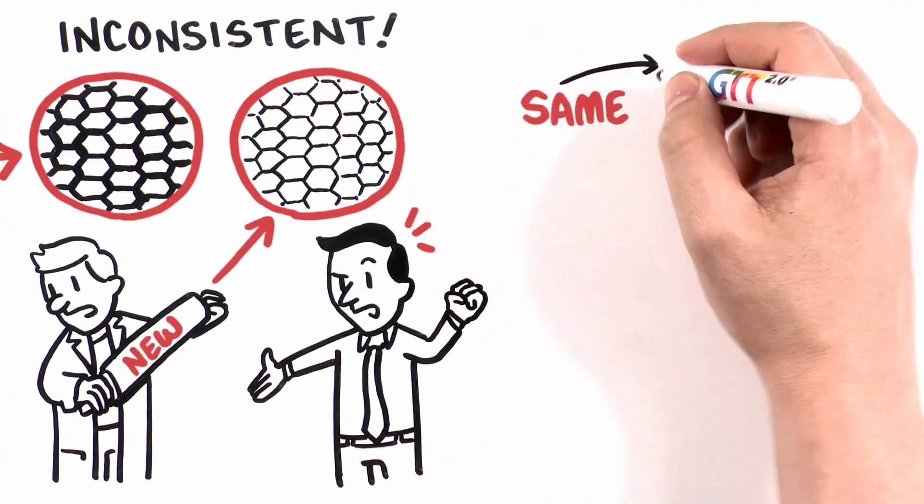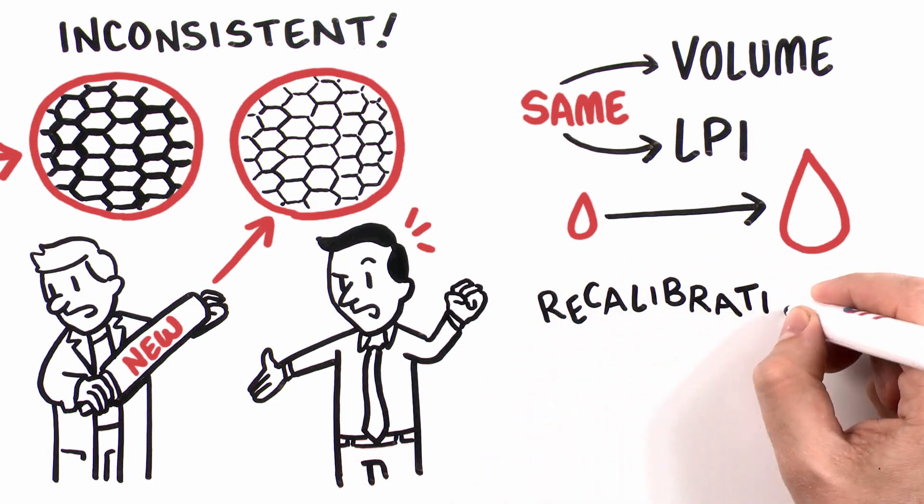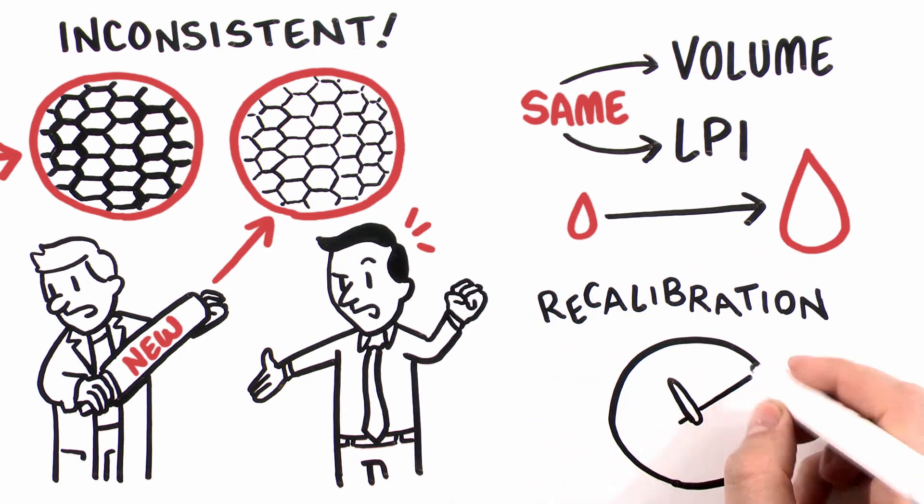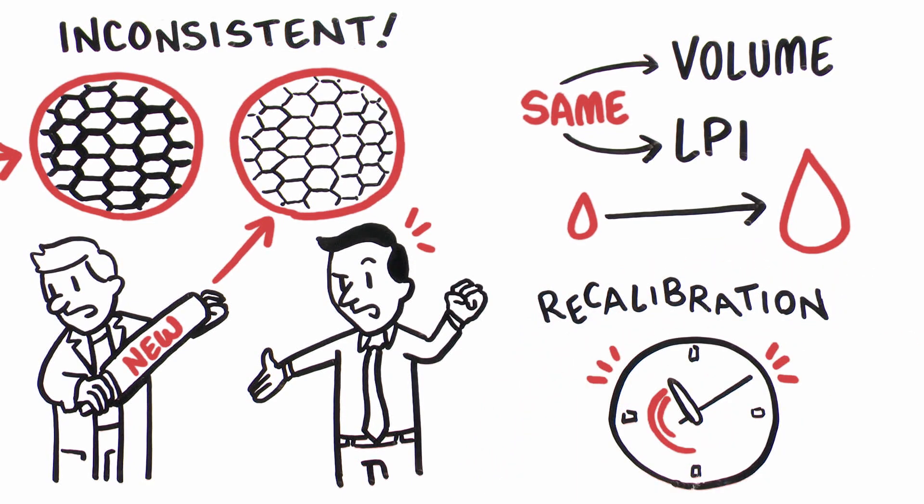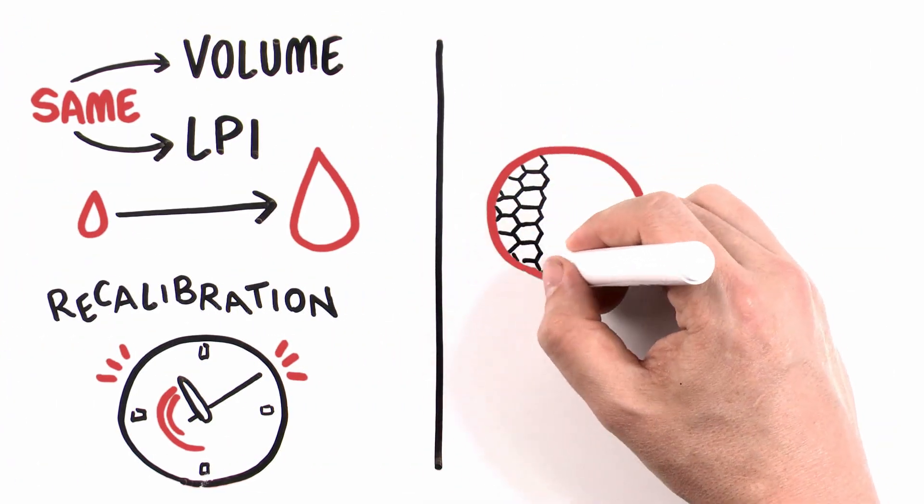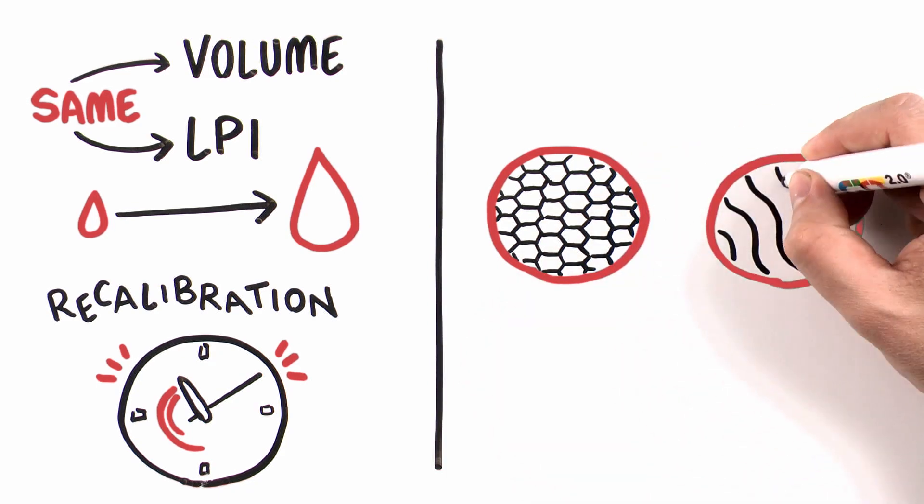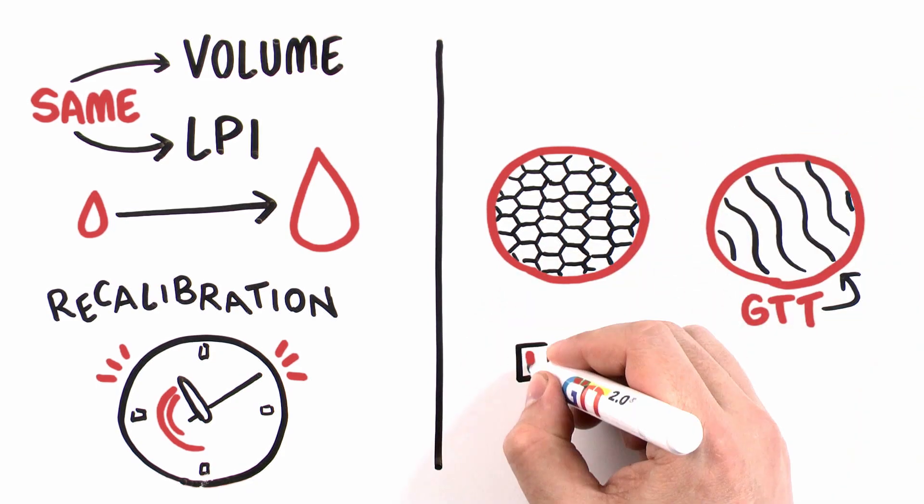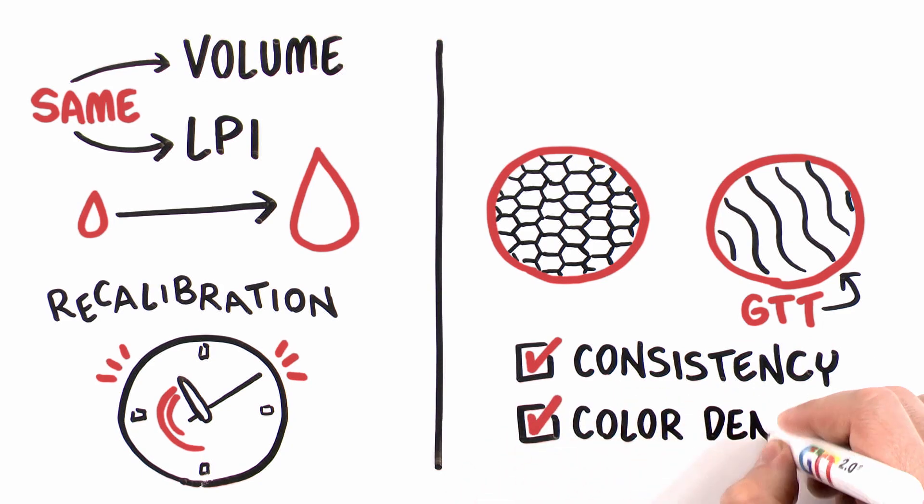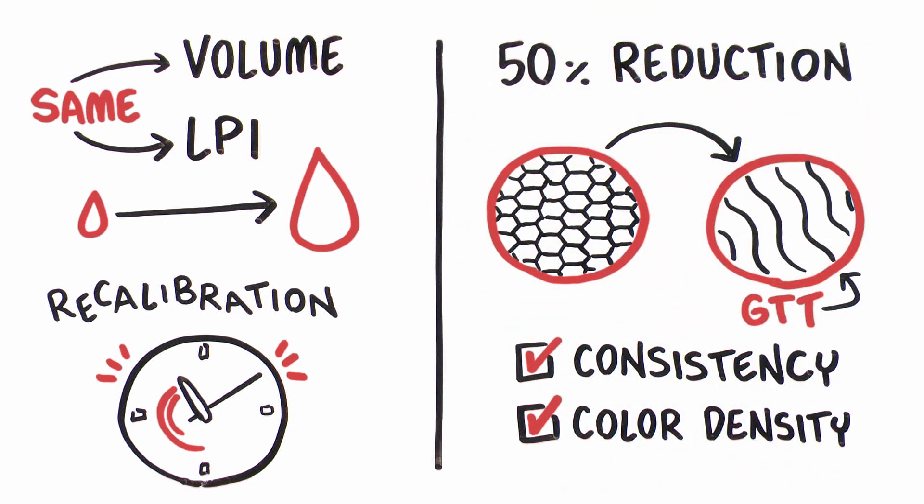As a result, the same volume and LPI of cell can transfer a different amount of ink and create a need for process recalibration and loss of valuable press time between analogs installations. In addition, as an analogs wears down micron by micron over time, GTT engravings exhibit much greater levels of print consistency and color density compared to conventional analogs engraving, largely due to the 50% reduction in wall surface area.